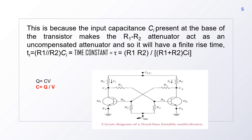This delay is because of the input capacitance CI present at the base of the transistor. This input capacitance makes the parallel combination of R1 and R2 act as an uncompensated attenuator. This uncompensated attenuator is the reason for transition time. When the resultant resistance R1 parallel with R2 — given by R1·R2/(R1+R2) — is combined with the input capacitance of transistor Q2, it results in a finite rise time given by (R1·R2/(R1+R2))·CI.